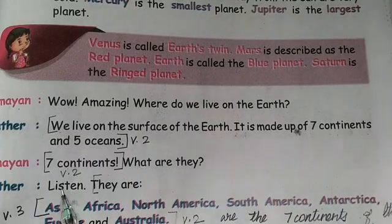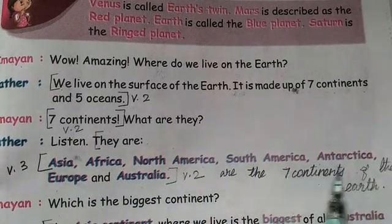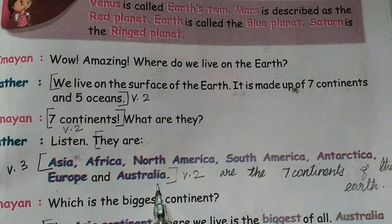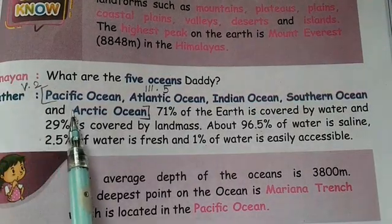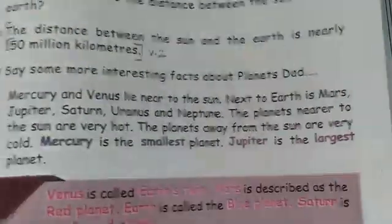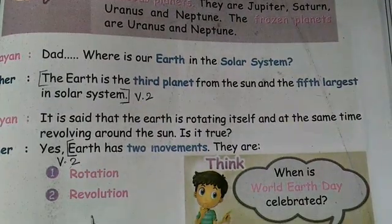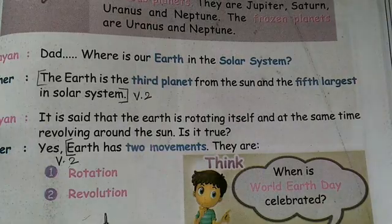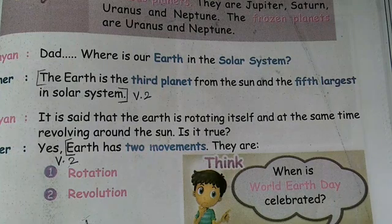The Earth is made up of seven continents and five oceans. The seven continents are Asia, Africa, North America, South America, Antarctica, Europe, and Australia. The five oceans are Pacific Ocean, Atlantic Ocean, Indian Ocean, Southern Ocean, and Arctic Ocean. The Earth has two movements: rotation and revolution. Cover those details in your answer as well.